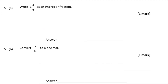Question 5a — write one and four ninths as an improper fraction. An improper fraction is a top-heavy fraction where the numerator is bigger than the denominator. To convert a mixed number, multiply the whole number by the denominator: one times nine is nine. Then add the numerator: nine plus four is 13. So one and four ninths is the same as 13 ninths.